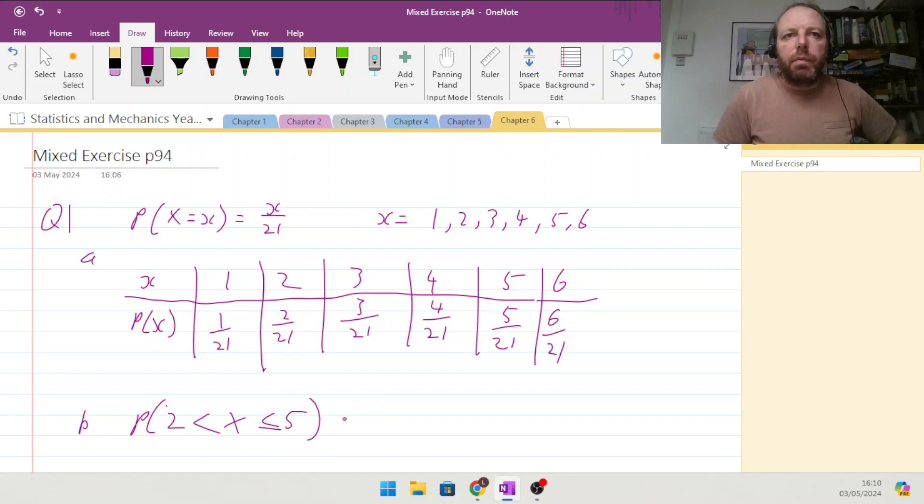Find the probability of 2 less than x less than or equal to 5. Okay, greater than 2 would be 3 twenty-firsts, plus 4 twenty-firsts, and less than or equal to 5, 5 twenty-firsts.